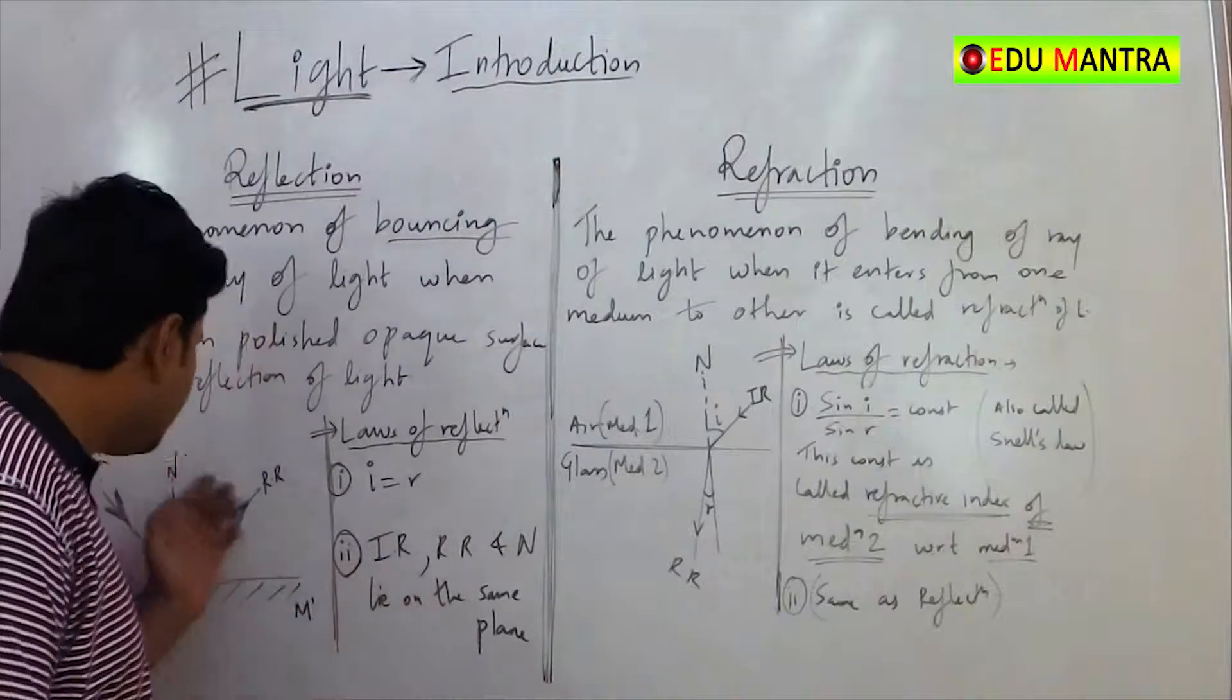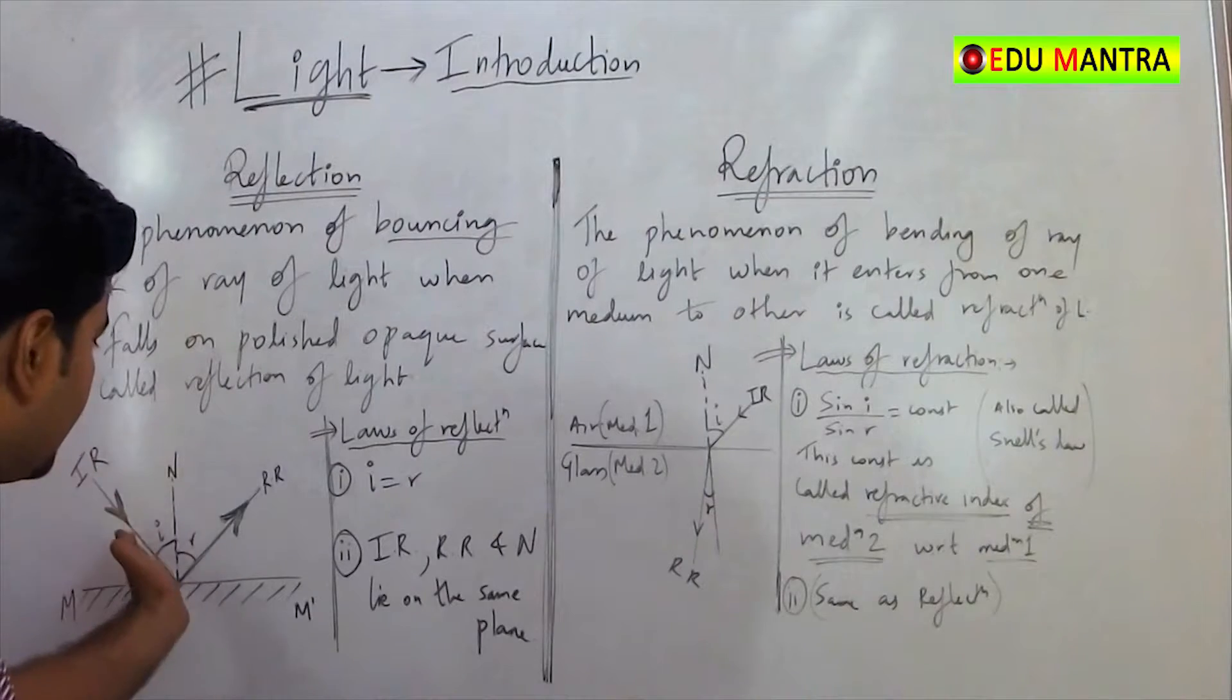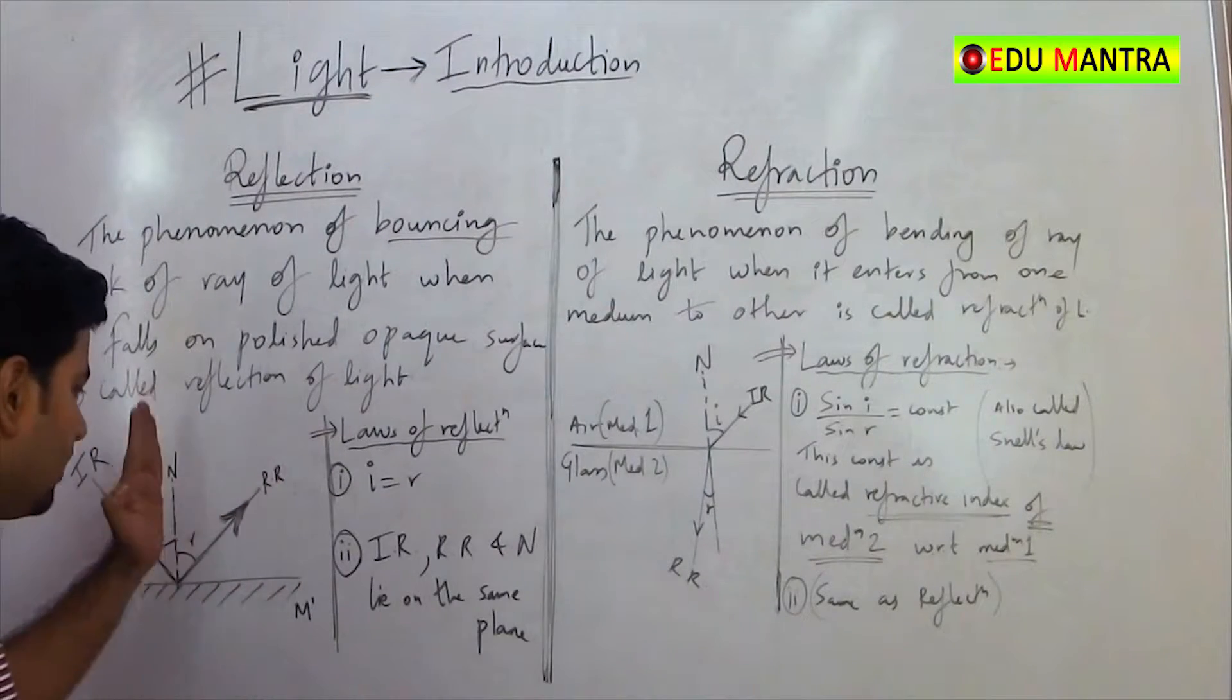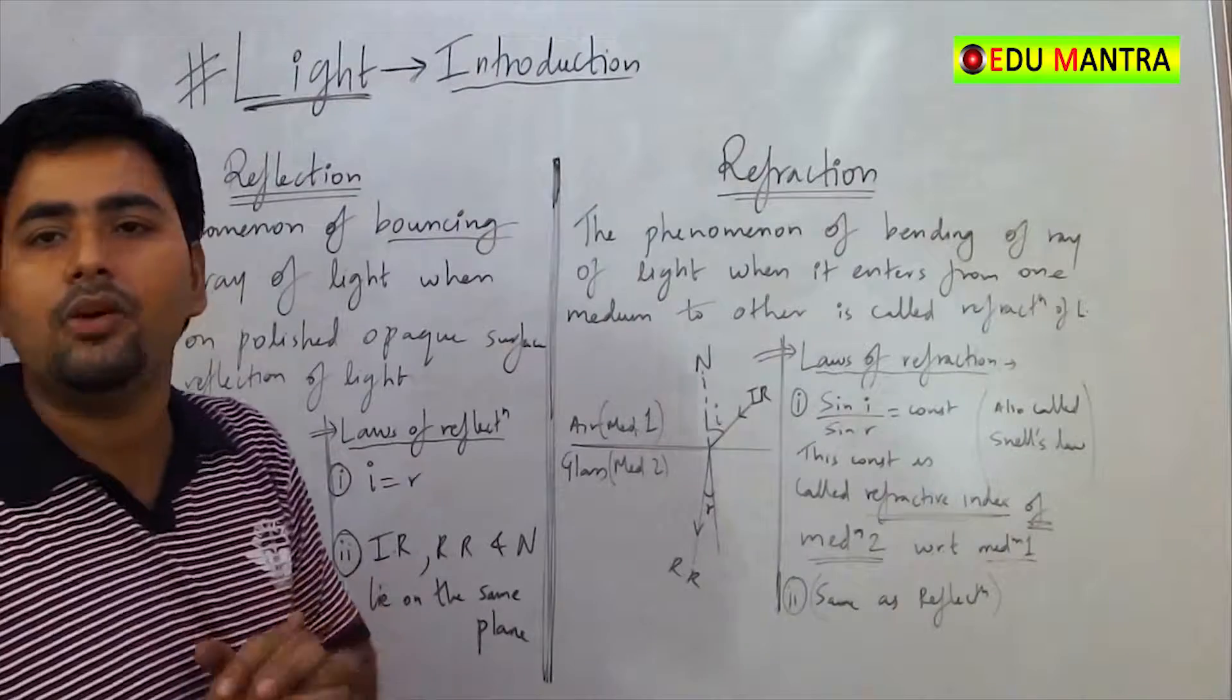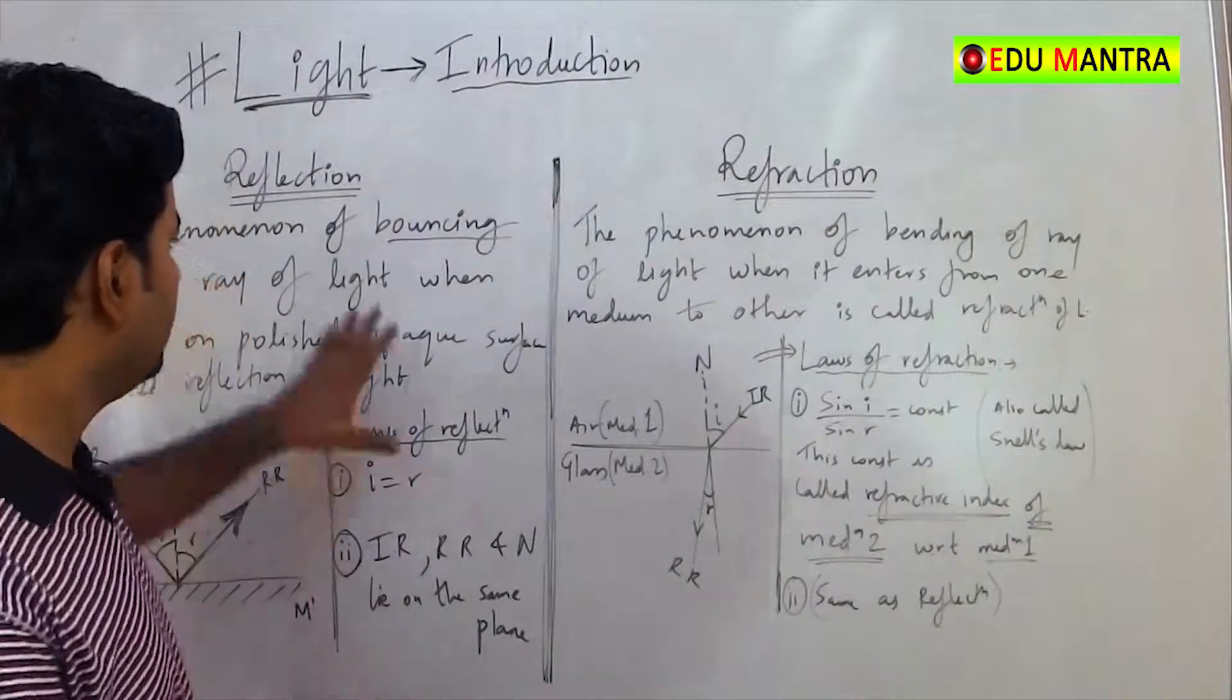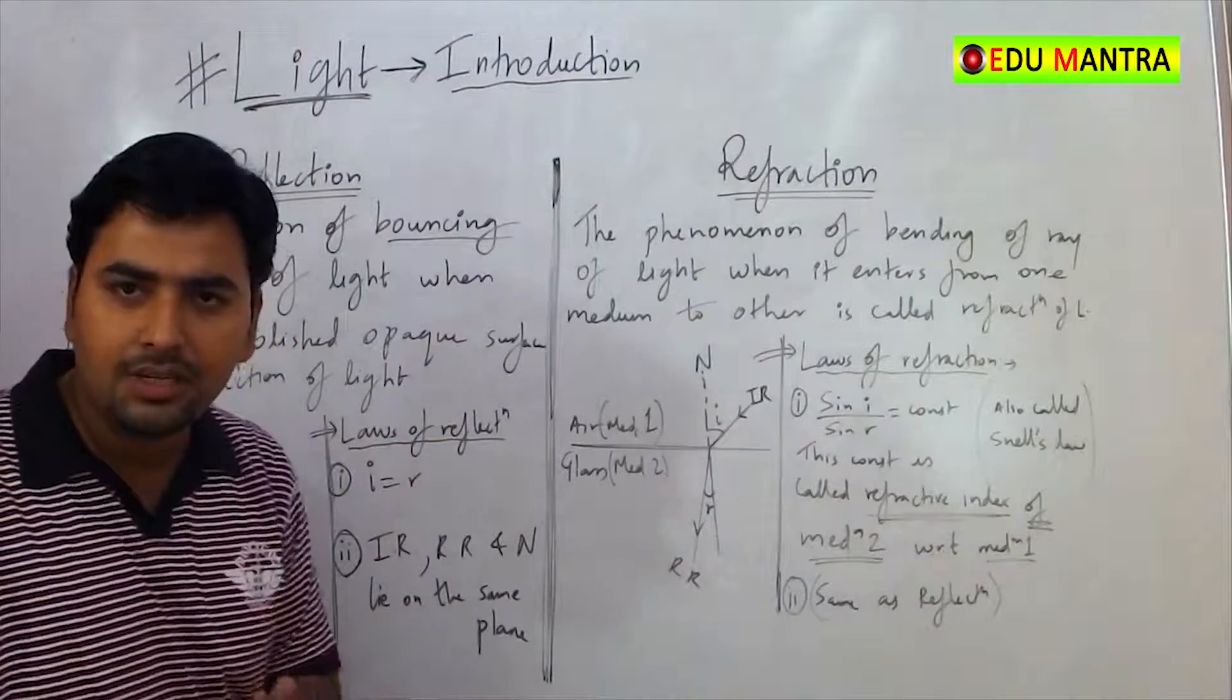The second law: incident ray and this reflected ray and the normal, these three, they are always coplanar and they lie on the same plane. So this is our reflection basically.